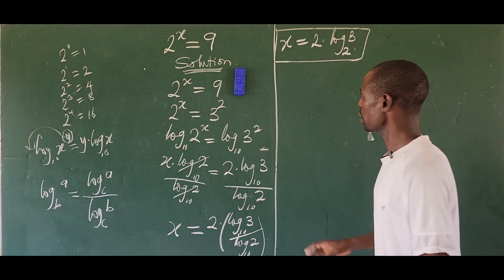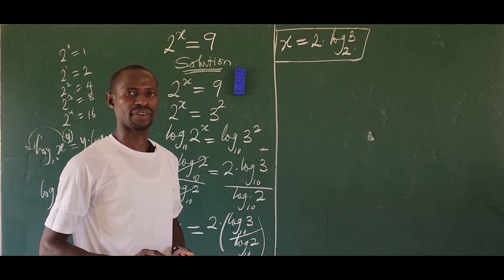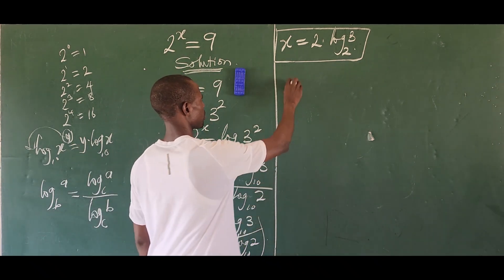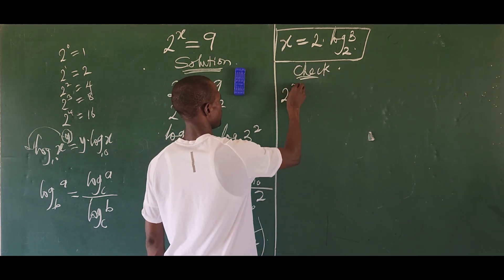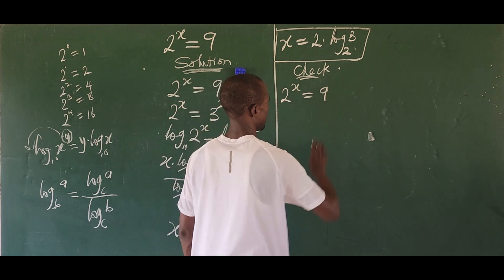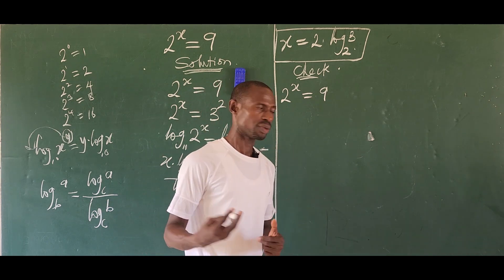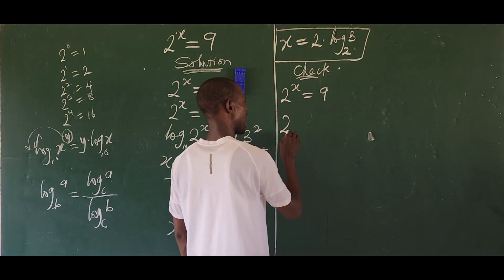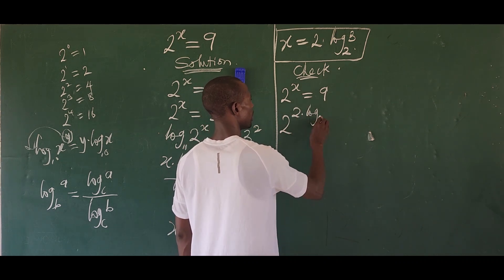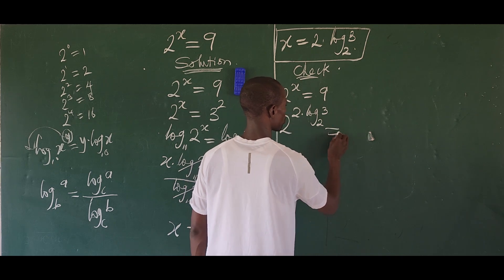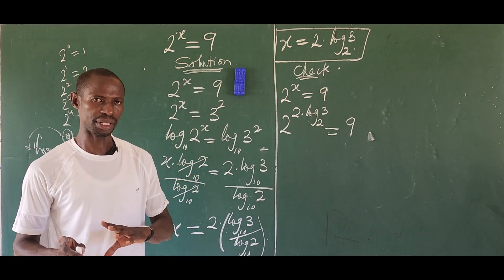Now we want to do a simple check — a verification. Our original question is 2 to the power of x equals 9. Wherever we see x, we put in 2 times log base 2 of 3. So this gives us 2 raised to the power of 2 times log base 2 of 3, equal to 9.